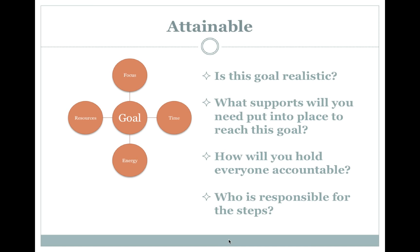An obtainable goal is one within the realm of your control and doable with your given resources. Attainability is much correlated with how large the gap is that we want to close and how much focus, energy, time, and resources we are prepared to put into attaining the goal. When checking to see if a goal is obtainable, one may ask: Is this goal realistic? What supports will you need to put in place to reach the goal? How will you hold everyone accountable? And who is responsible for the steps?